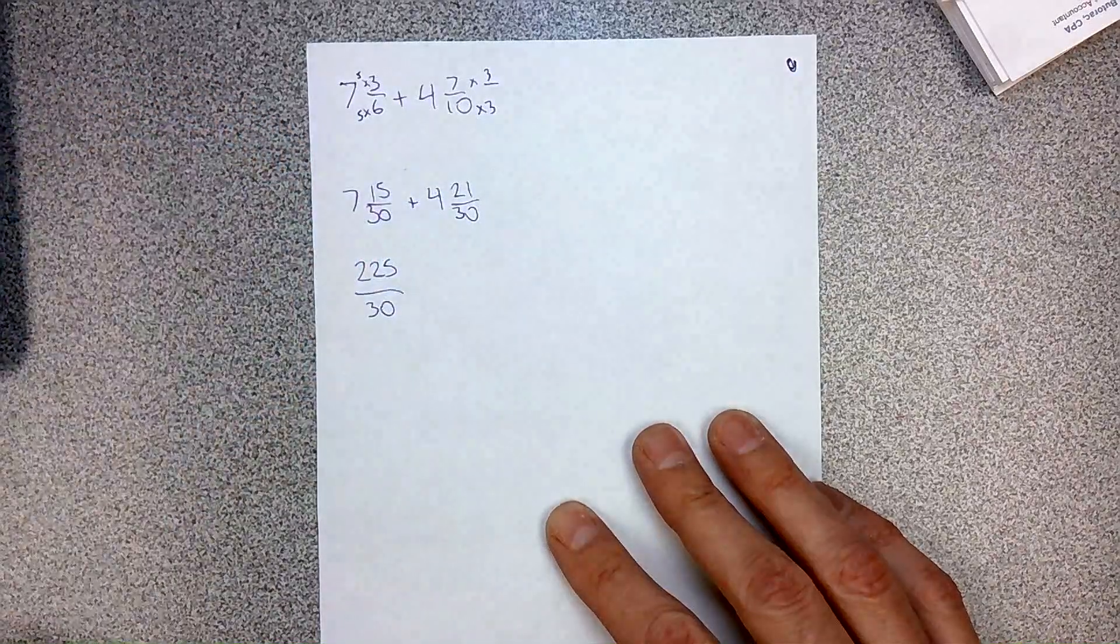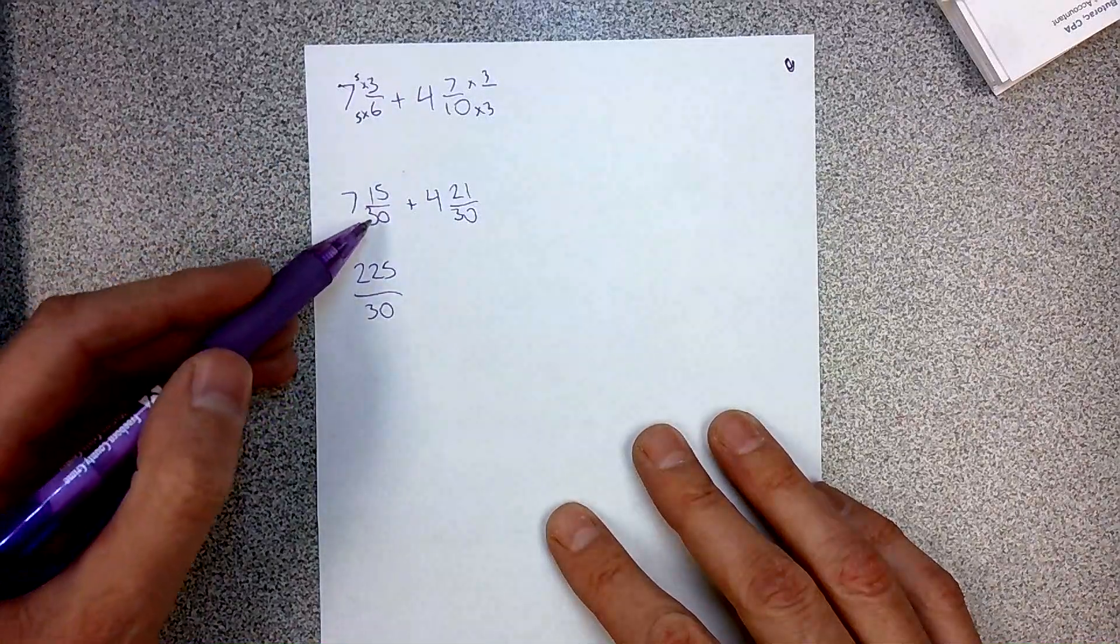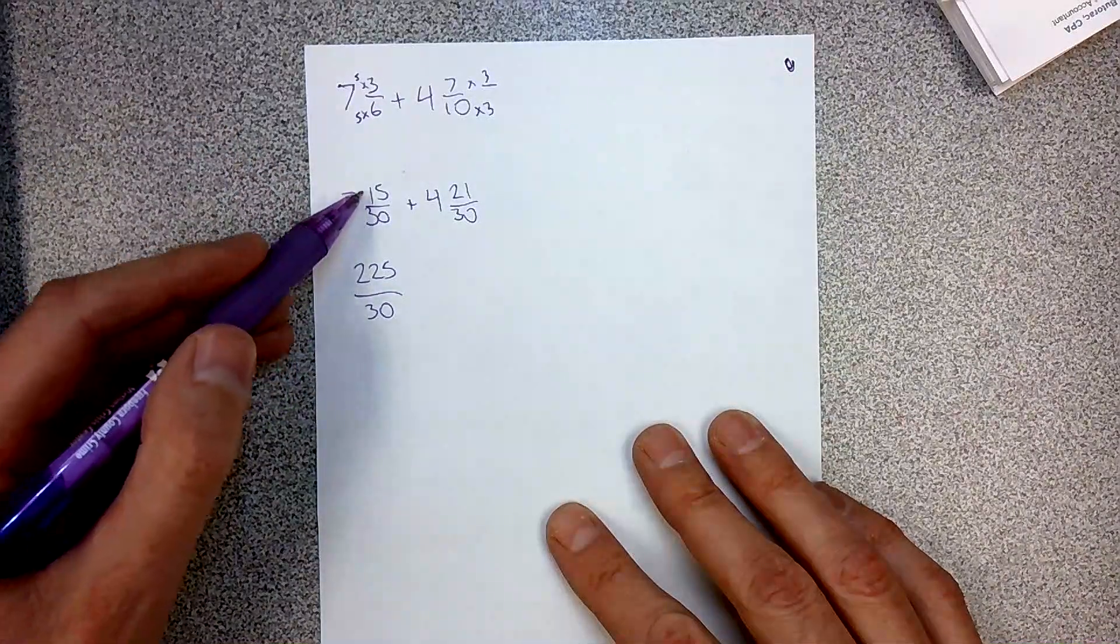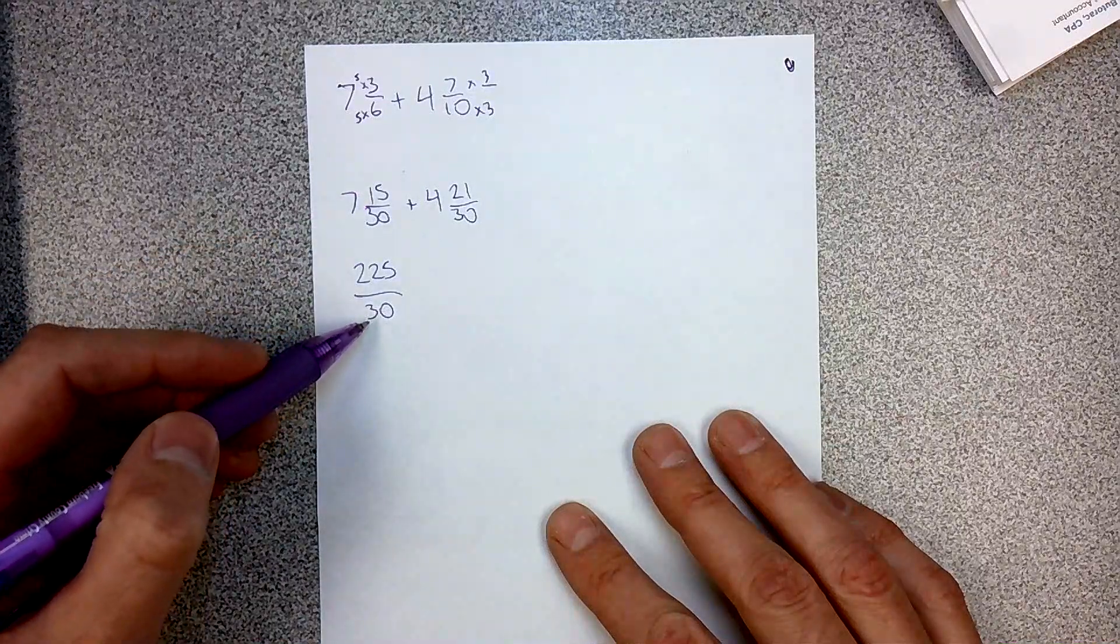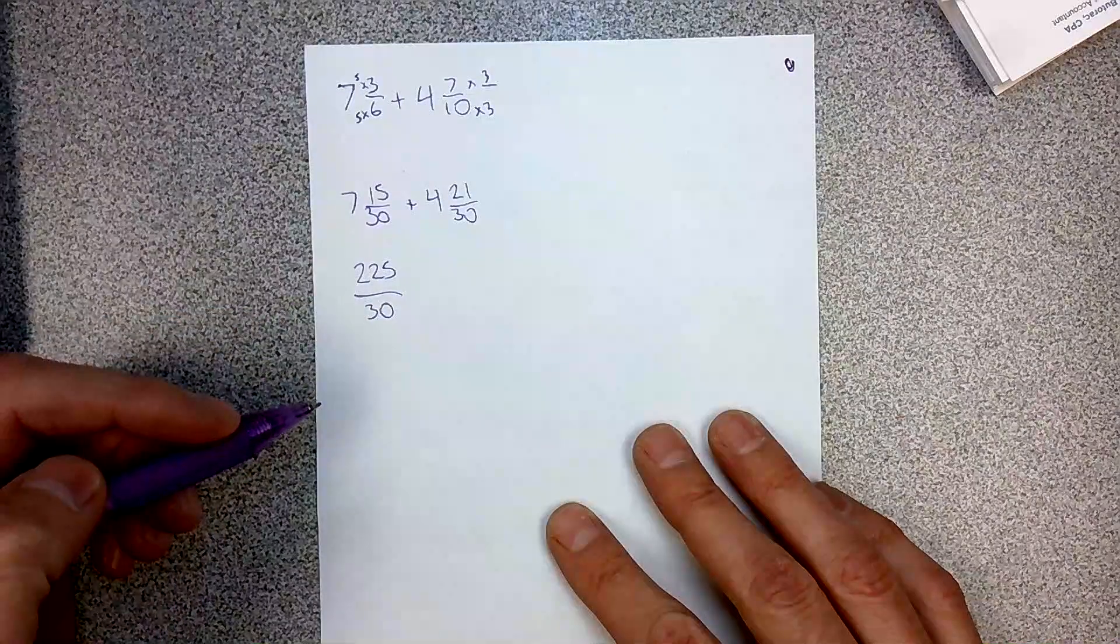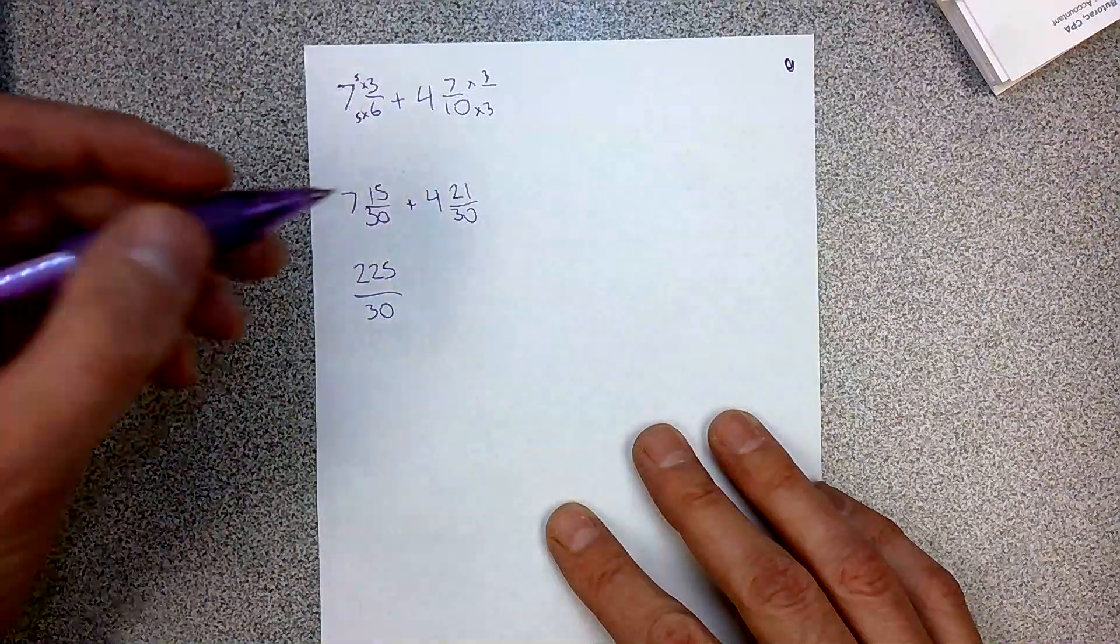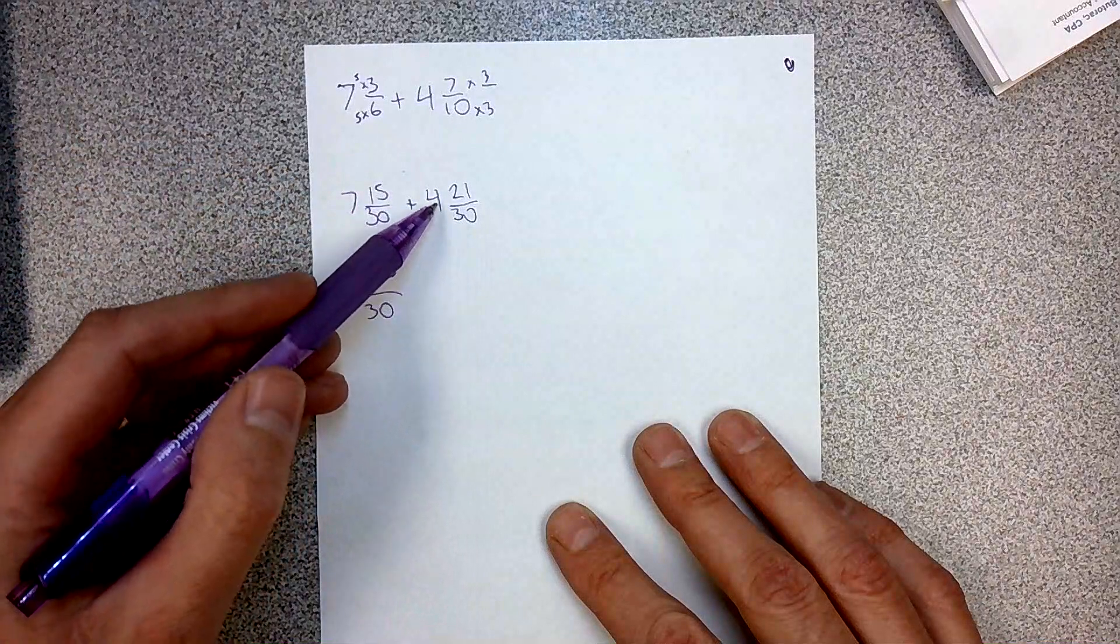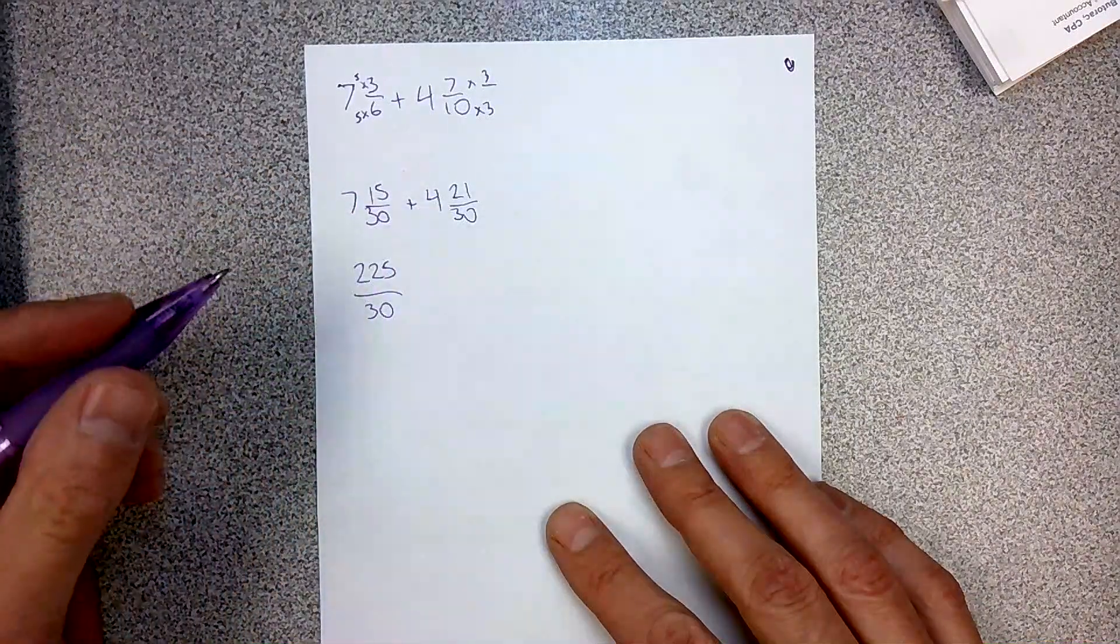When you change a mixed number to an improper fraction, denominator times the whole number plus the numerator, you don't change the denominator. That doesn't change. 30 goes into 225 7 times with 15 left over. Similarly, 30 times 4 is 120, plus 21 is going to be 141.